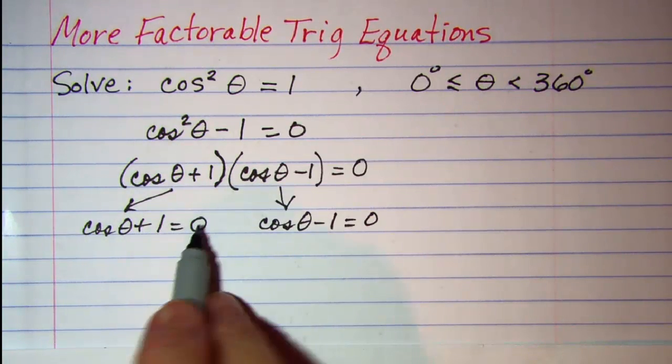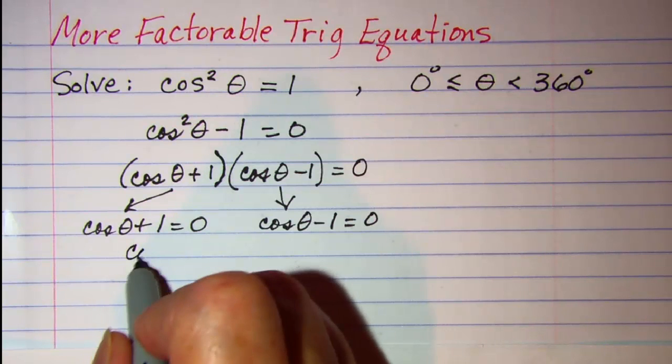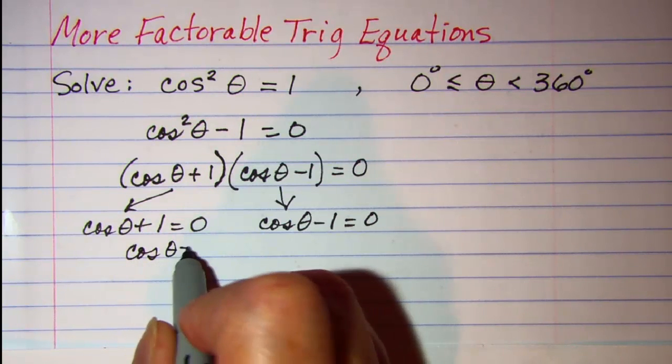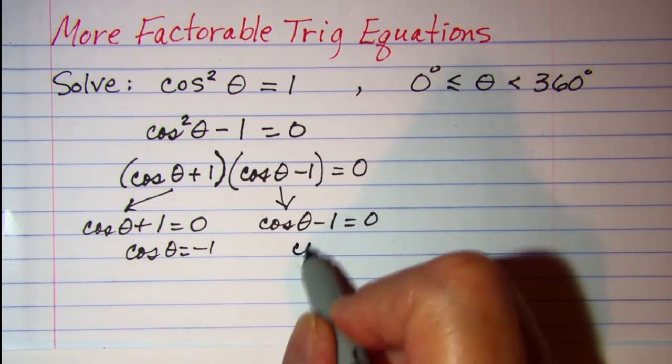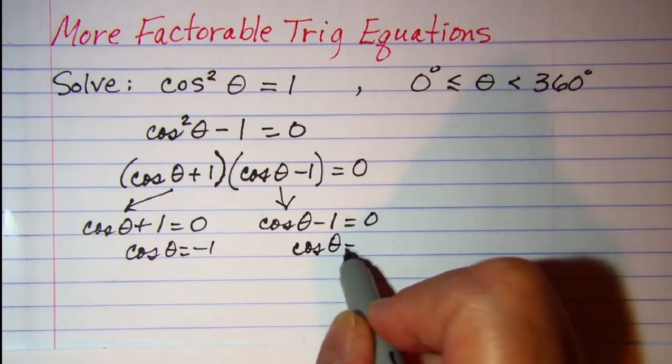If we subtract 1 from both sides we have cosine theta equals negative 1 and if we add 1 to both sides we have cosine theta equals positive 1.